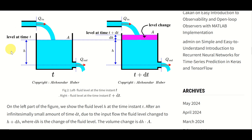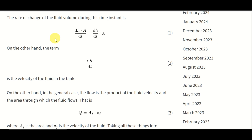Let's start with modeling. On the left part of this figure, we show the fluid level H at the time instant T. After an infinitesimally small amount of time DT, due to the input flow, the fluid level changes to H plus DH, that is, the level at the time instant T plus DT. The level change is marked by a purple area. In reality, this is a three-dimensional volume. The volume change is dH multiplied by A, where A is the cross-section area of the tank. The rate of change of the fluid volume during this small time interval is dH·A over DT, which equals dH/dt multiplied by A.